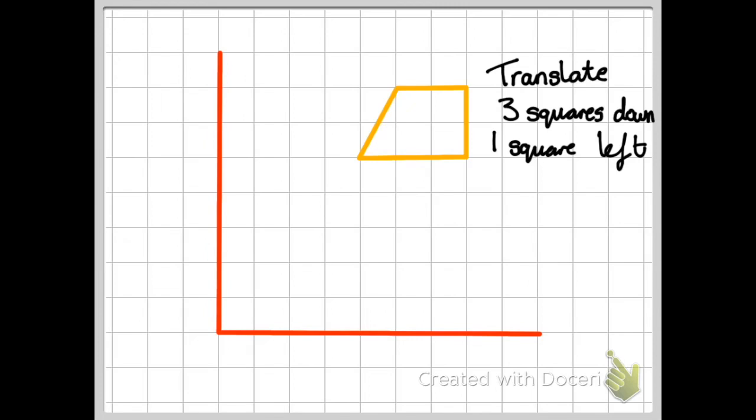So let me show you a simple example of translation. When translating a shape you must find a vertex. A vertex is a mathematical word for a corner. So here I put a cross on where there is a vertex. Now in this example it asks me to go three squares down and one square to the left. So that's exactly what I'm going to do.